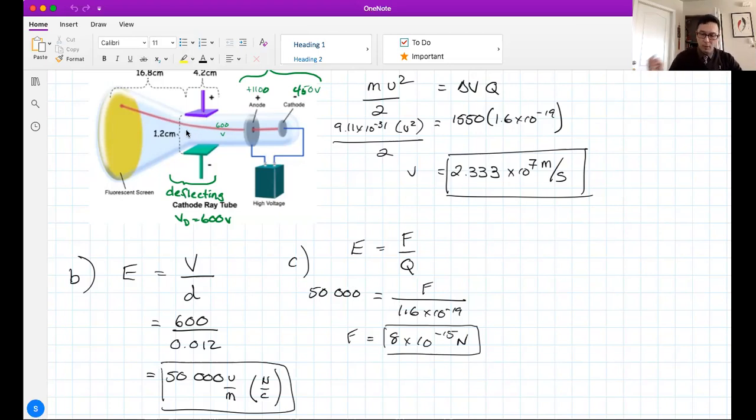Now once I know that force, I should be able to fairly easily calculate the acceleration using this equation, F net equals MA. That is my net force because it's the only force. There's no forces opposing the upward motion of those electrons. So 8 × 10⁻¹⁵ divided by the mass of an electron, 9.11 × 10⁻³¹. Find acceleration.